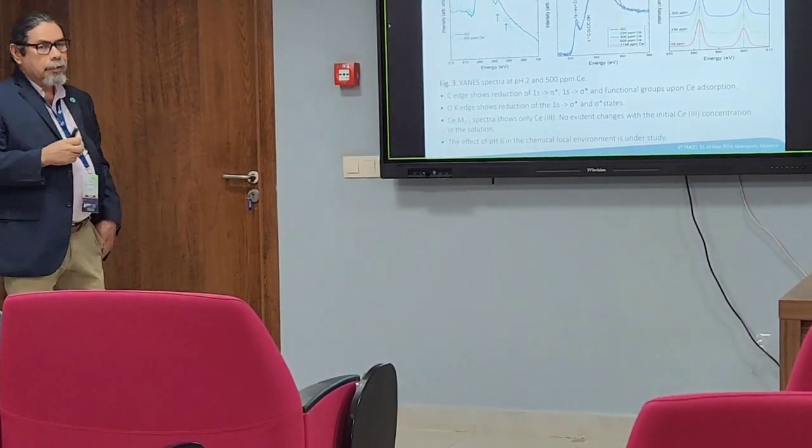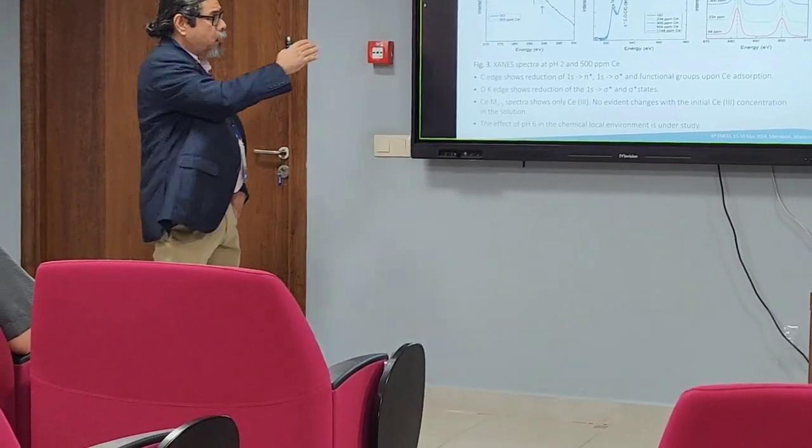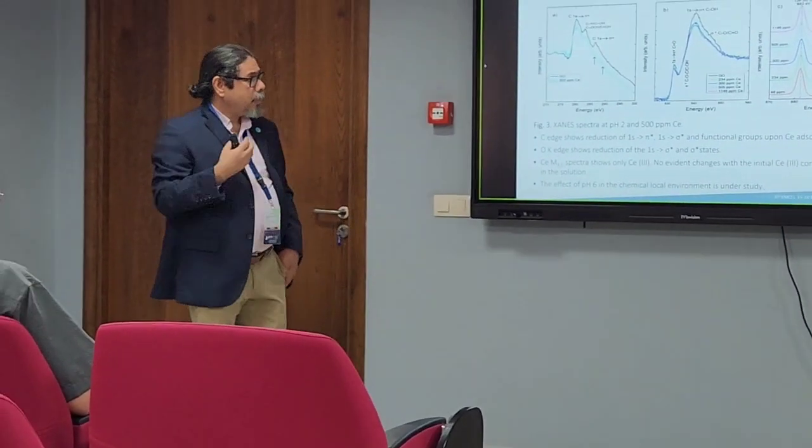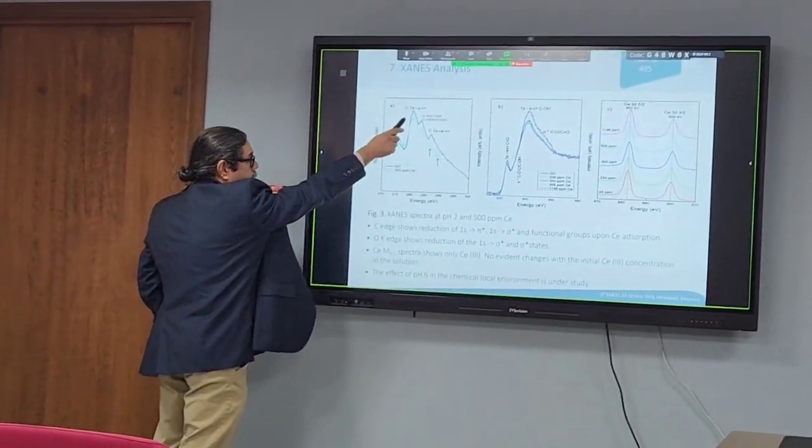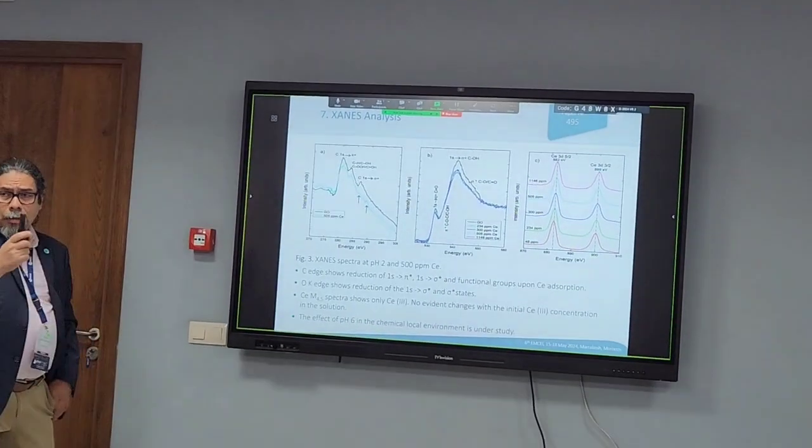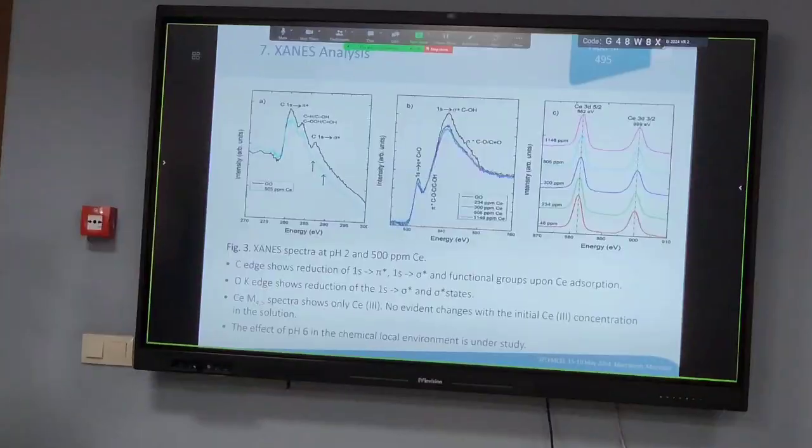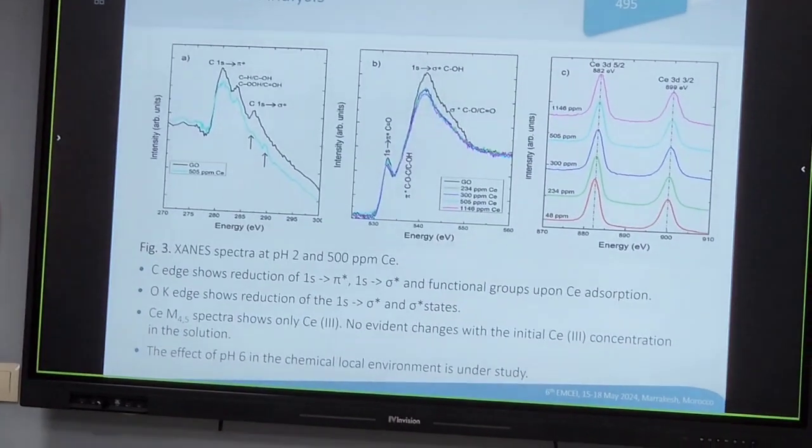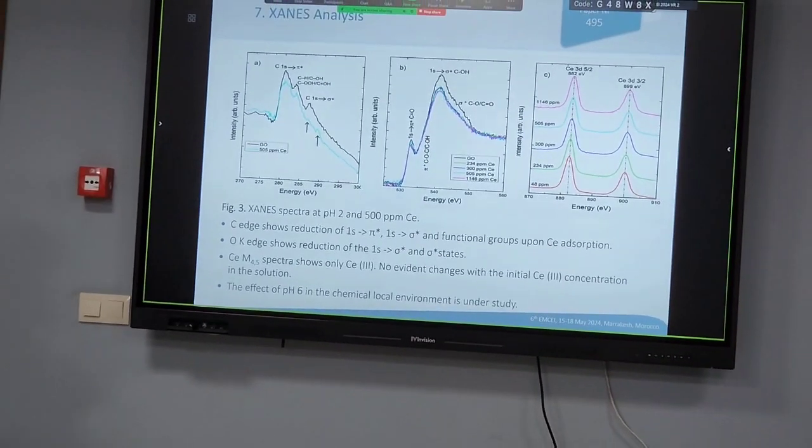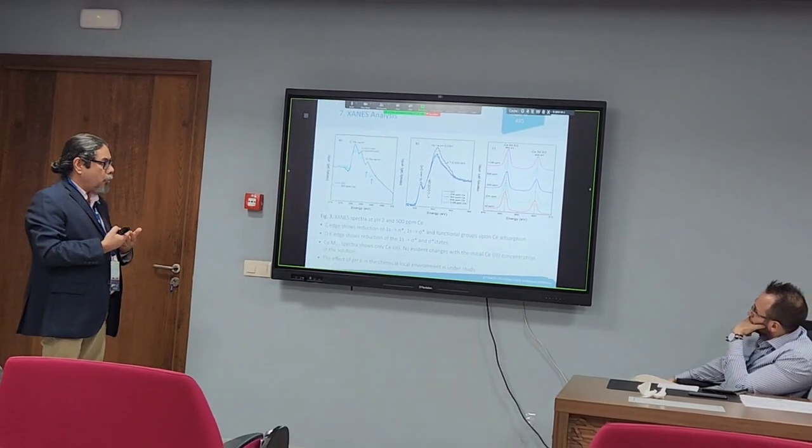In X-ray absorption analysis, we tested three absorption edges: the carbon edge, the oxygen edge, and the cerium edge. We have a reduction in the intensity of the white line of carbon that is related with the transition from the S-level to the P-star level, related with a reduction of the unoccupied space, and also related with the opening of the double bonds with the absorption of cerium.